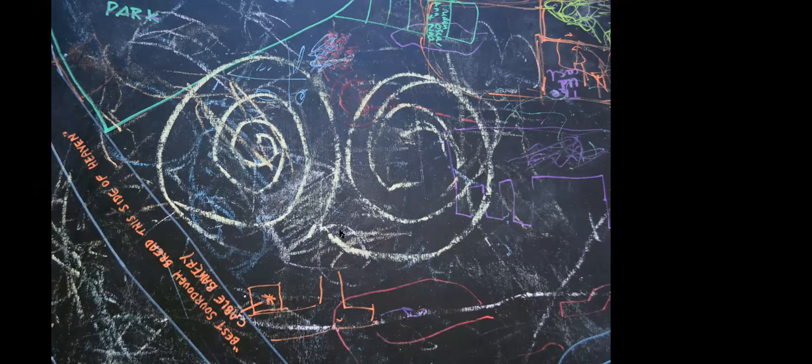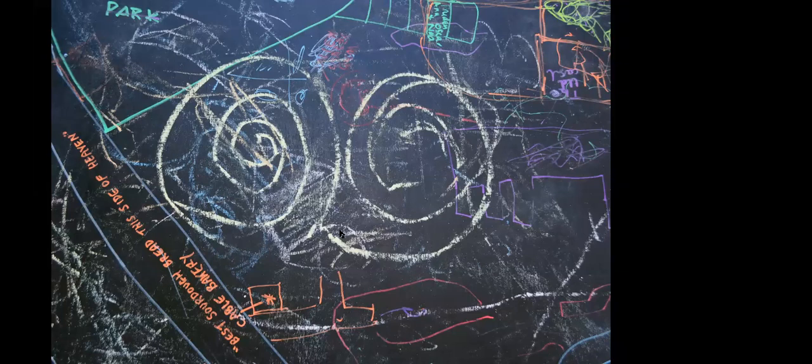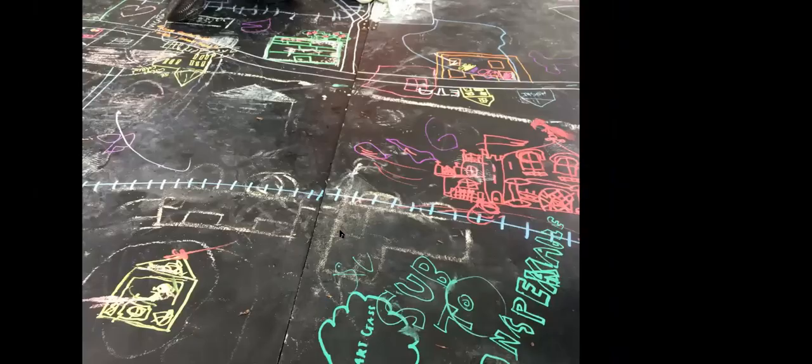But what I found sort of interesting with this is that you again with as with the Camberwell, sorry, with the Tower Hamlets childhood homes map, you see this interesting balance between adults interpretations and children. So here you have just note the best sourdough bread this side of heaven, the cable bakery next to this sort of crazy spiral thing, which, you know, what could it be?